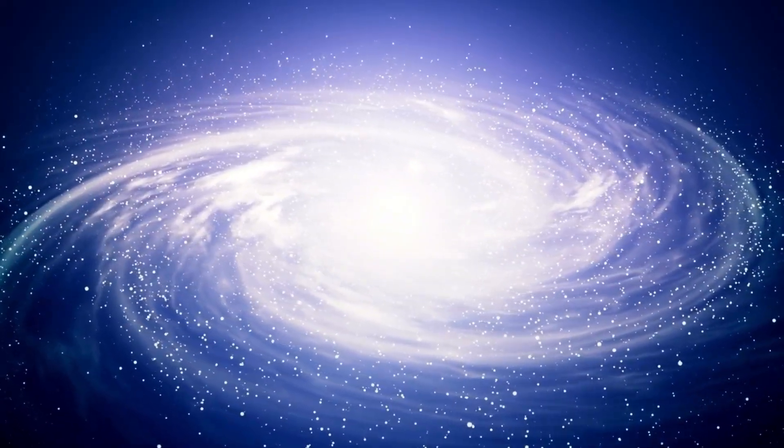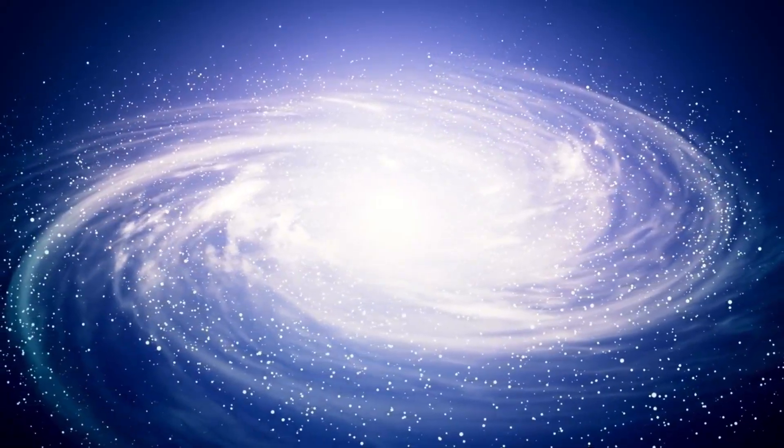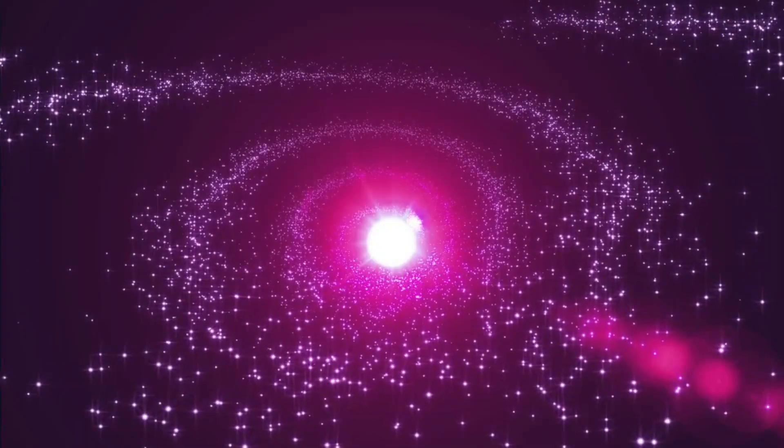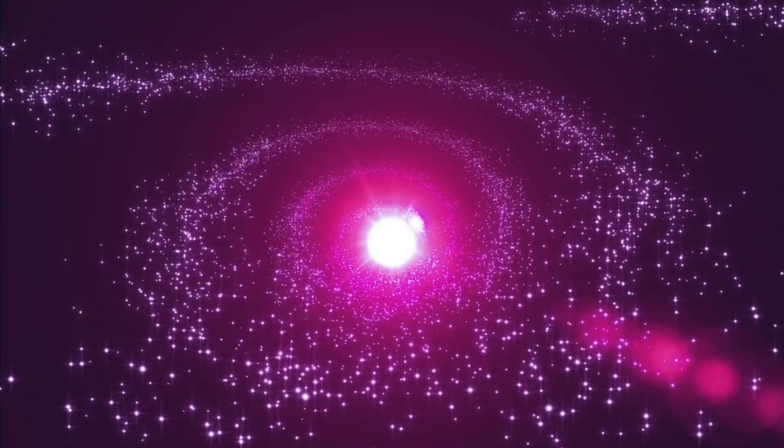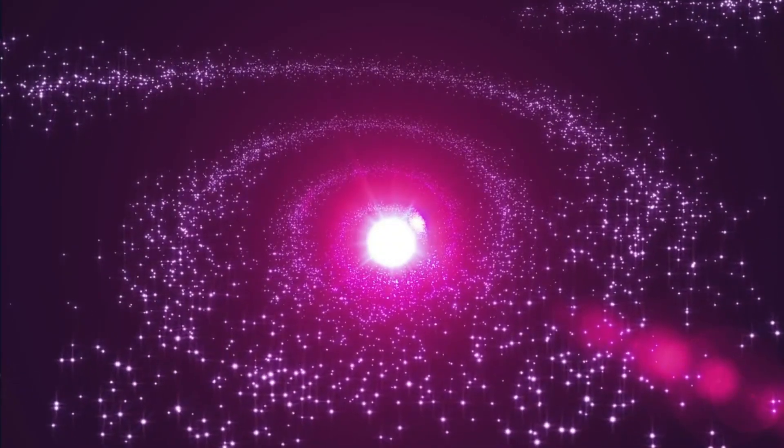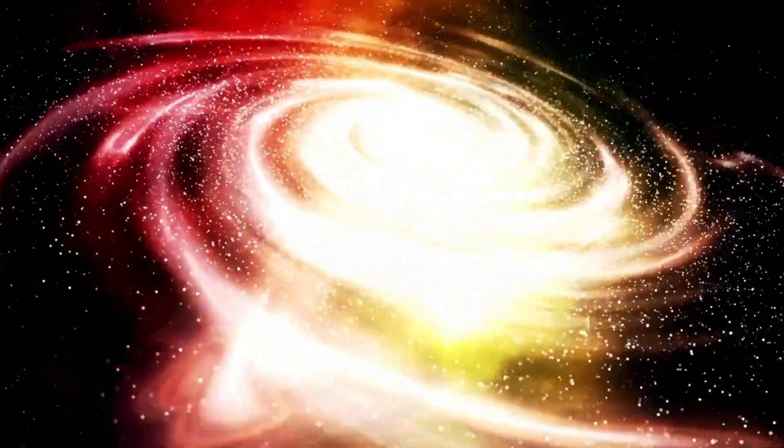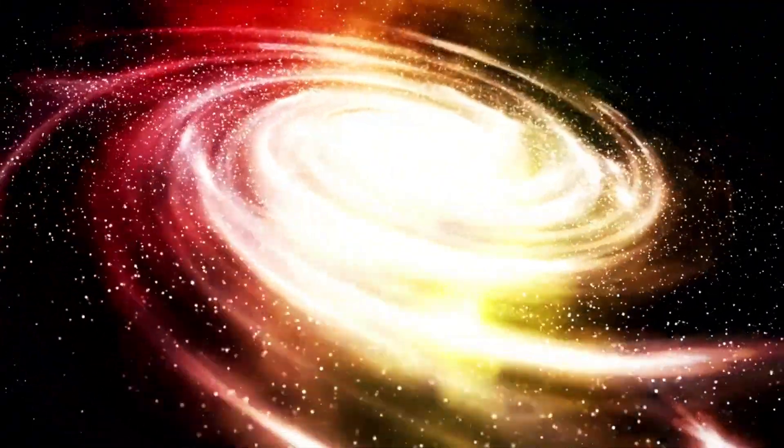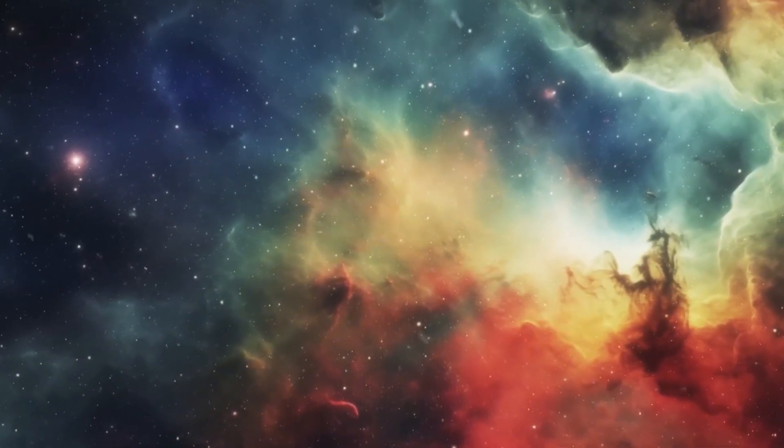However, if the universe is only 13.8 billion years old, how can something extend to 93 billion light-years? It's a heavenly mystery. The expansion of the universe is like raisin bread baking in an oven. In this analogy, consider galaxies as raisins. As the dough expands, the raisins move farther and farther apart. Since the Big Bang, this process has remained constant. Galaxies continue to drift further and further apart.